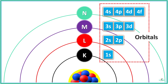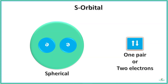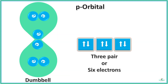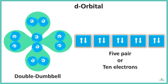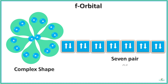S, P, D, and F are the commonly known orbitals, defined for the study of atoms and named according to their shapes. An S orbital is spherical in shape and has one pair of electrons, or two electrons, in it. A P orbital is dumbbell shaped and has three pairs, or six electrons, in it. A D orbital resembles a double-dumbbell shape and has five pairs, or ten electrons, in it. And an F orbital is complex in shape and has seven pairs, or 14 electrons, in it.